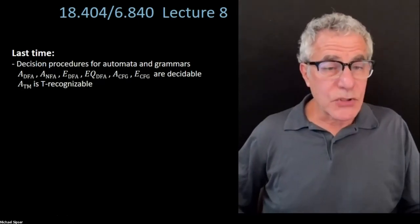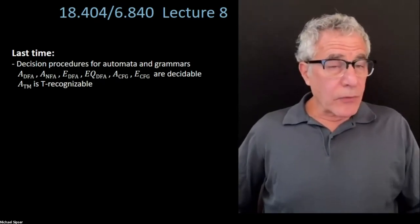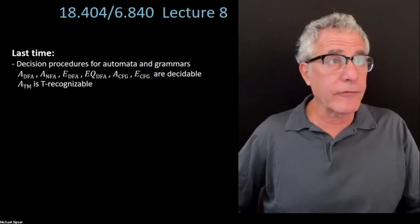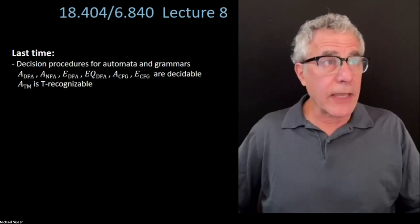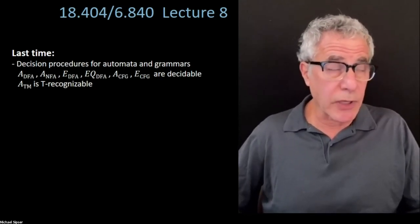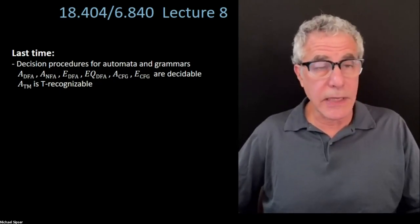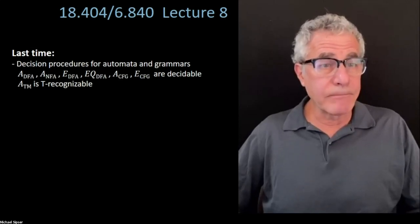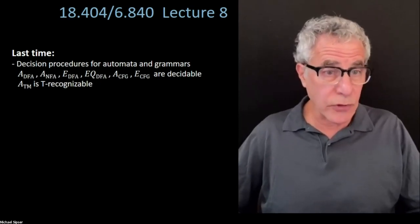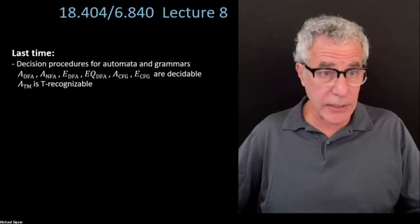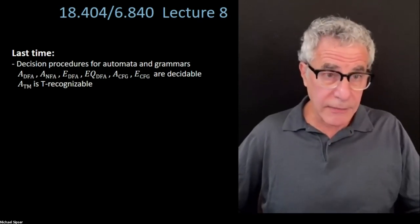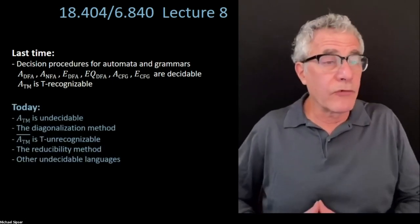Let me get started. Last time we considered procedures for testing properties of various automata and grammars: the acceptance problem for DFAs, NFAs, the acceptance problem for context-free grammars, and emptiness problems for DFAs and context-free grammars. We also showed that ATM is Turing recognizable via the universal Turing machine. We mentioned ATM is not decidable, which we promised to prove today, and we will.